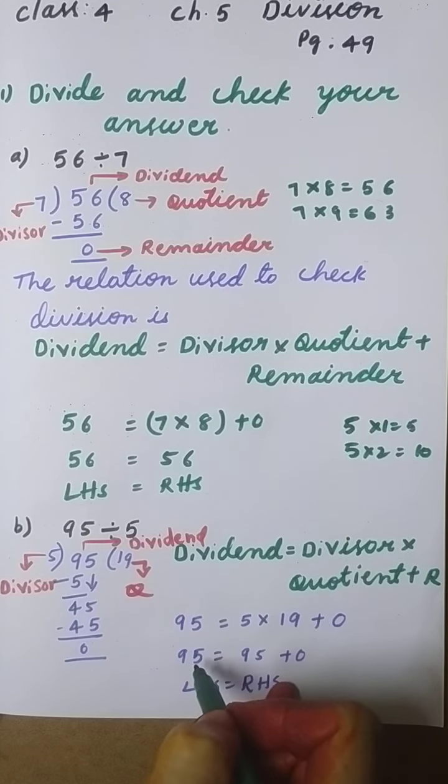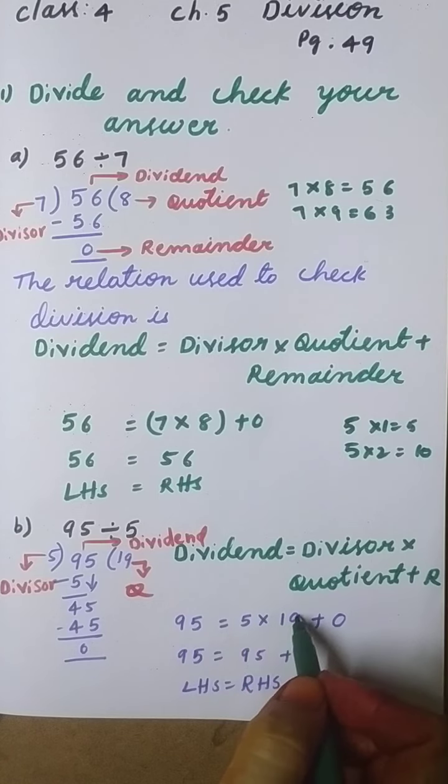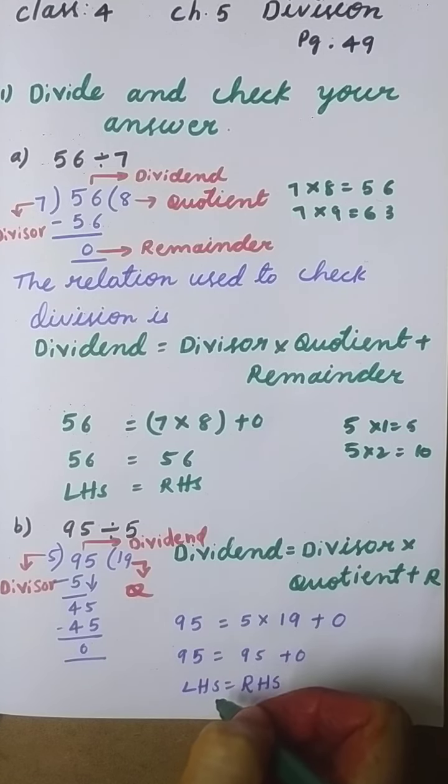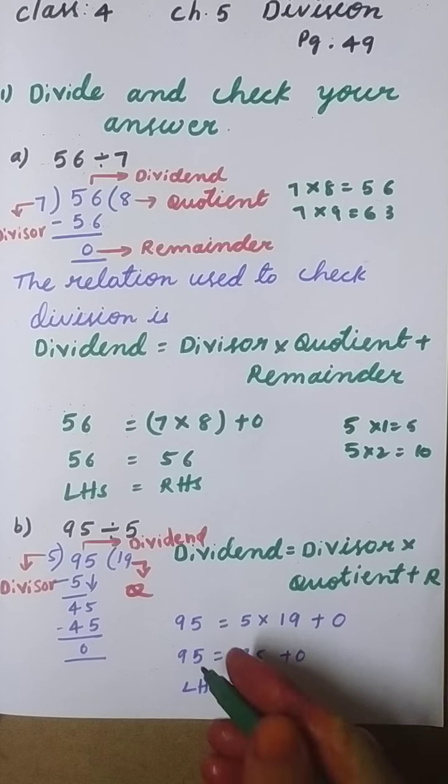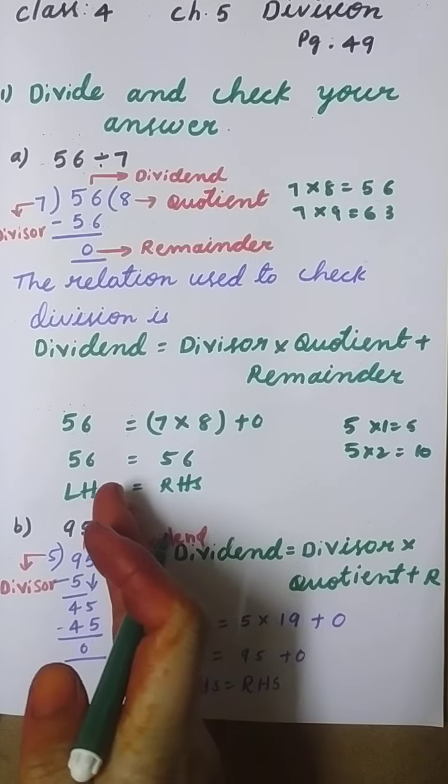So 95 equals 19 times 5. How much is 19 times 5? 95 plus 0. 95 equals 95. LHS equals RHS.